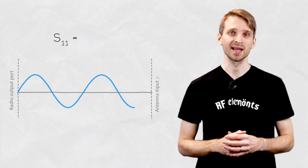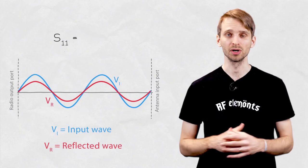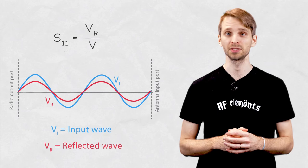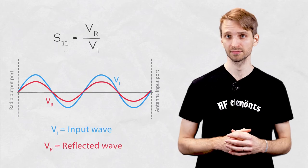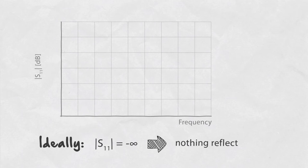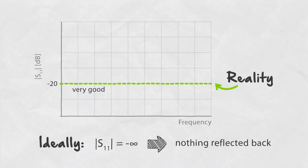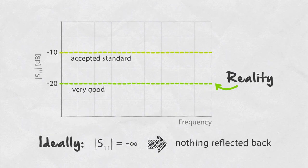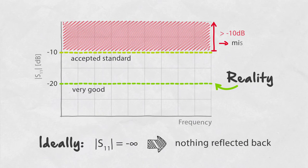S11, also known as the reflection coefficient, is the ratio of the voltage wave reflected from the antenna port to the input voltage wave. Ideally, S11 is as close to minus infinity as possible. In reality, minus 20 dB is considered a very good S11. Minus 10 dB is a standard adopted by many RF engineers as an acceptable limit of good matching. Anything above minus 10 dB is usually considered mismatched.